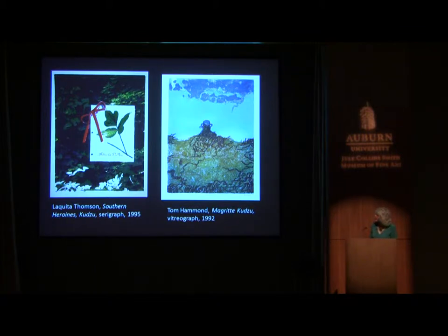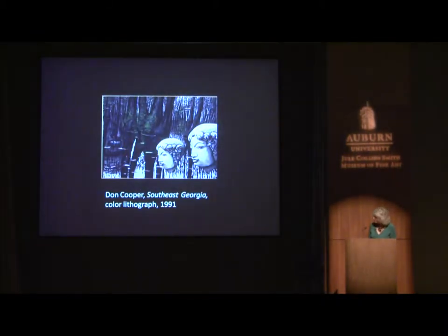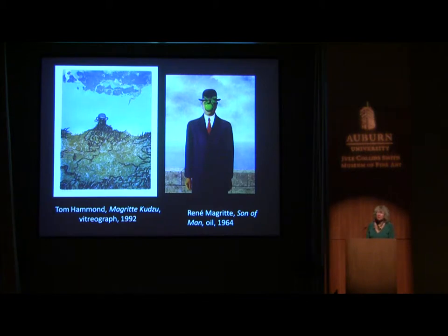Tom Hammond, who taught printmaking for years at the University of Georgia, appropriates a figure from the Belgian surrealist artist René Magritte—the signature man with the bowler hat whose face is often obscured, mocking conventions that require showing the face. In his kudzu representation, kudzu grows up and covers the face, combining Magritte's figure with a Southern invasive plant in a collage composition.